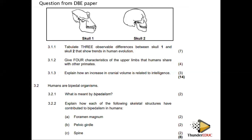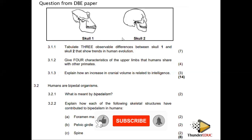A protruding jaw indicates a more primitive skull — primitive meaning an earlier evolutionary stage, around one million years ago — while a flatter jaw with reduced prognathism indicates a more modern skull.